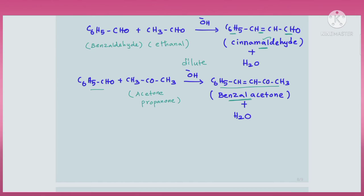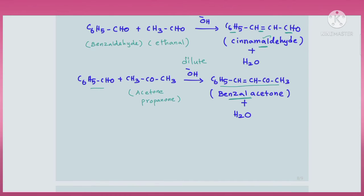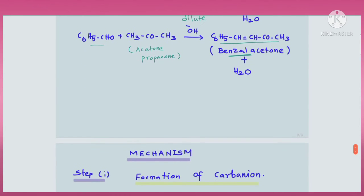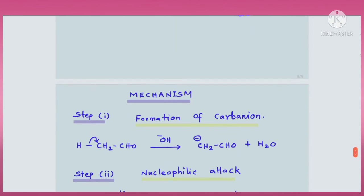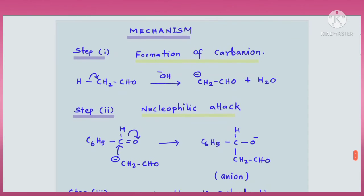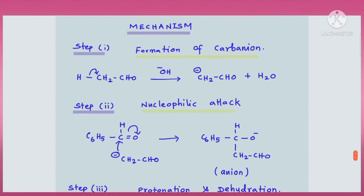We have discussed the examples for Claisen-Schmidt reaction. Now let us discuss the mechanism of the Claisen-Schmidt reaction — specifically the mechanism of the reaction between an aromatic aldehyde and an aliphatic aldehyde. The first step is the formation of a carbanion.